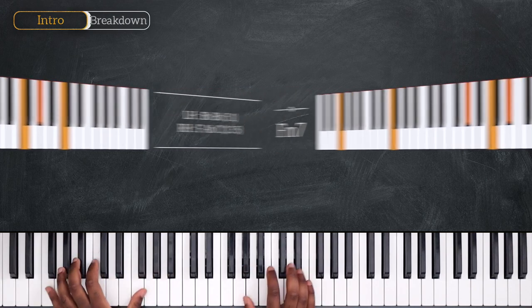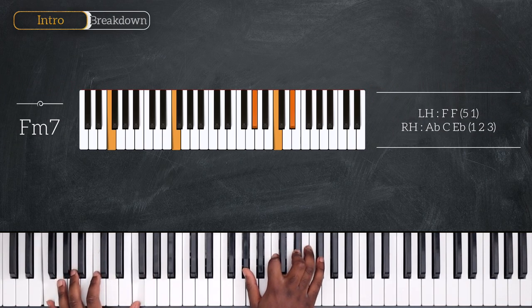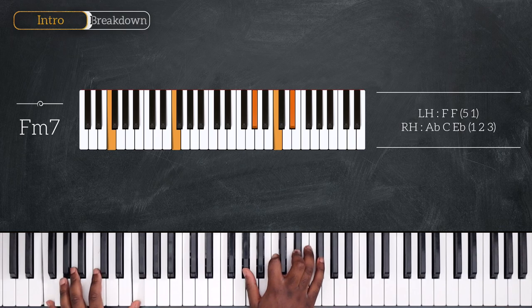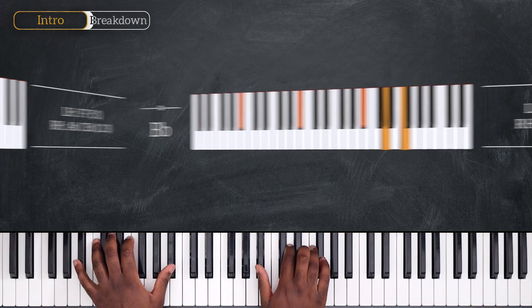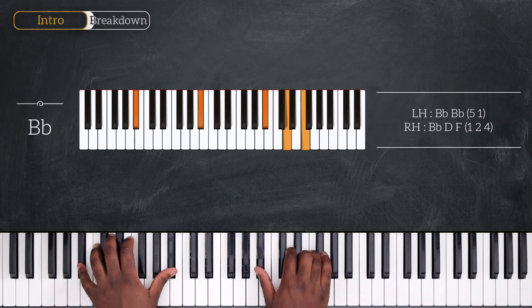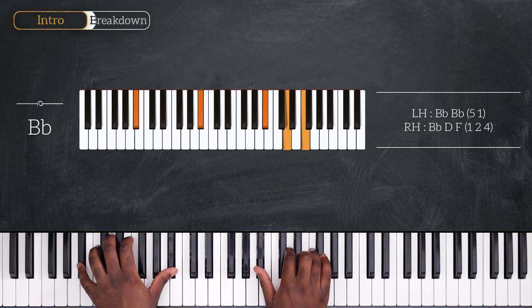Then we have this F minor 7, octave F, Ab, C, Eb. And then finally, back on Bb, this time playing Bb major, with Bb, D and F right hand.